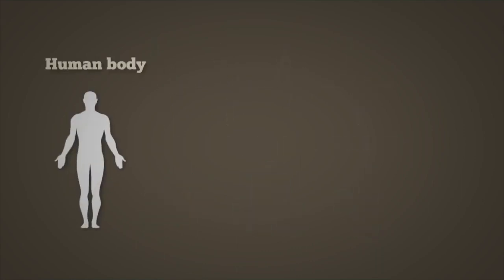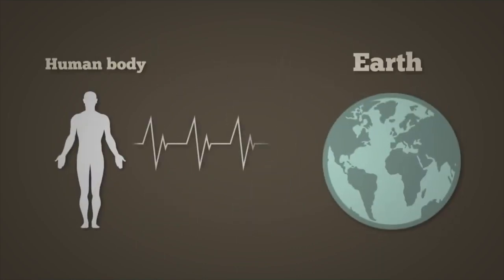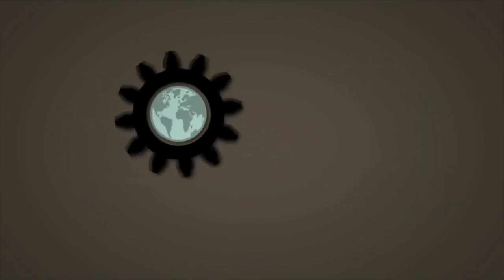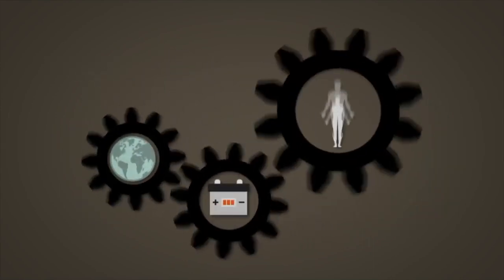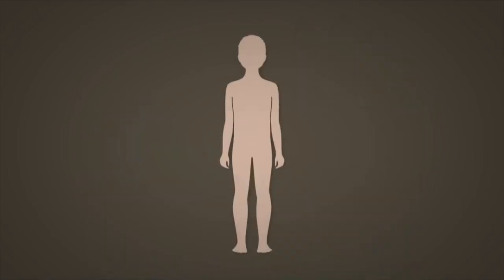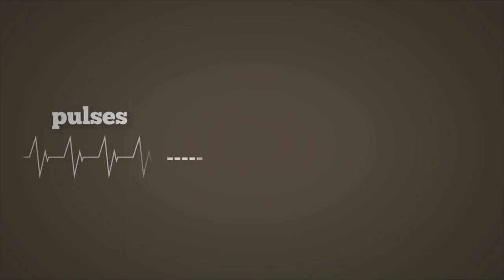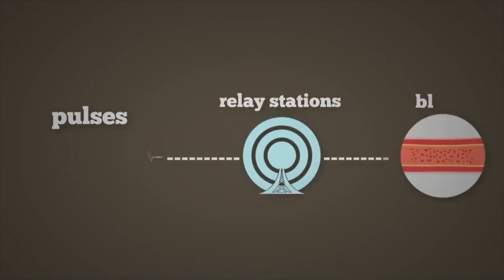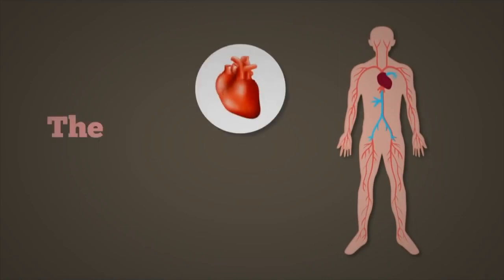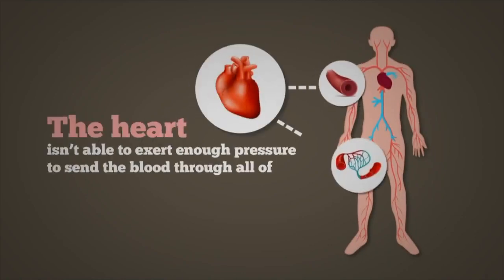Our body also pulses with the same basic frequency as the earth, and the pulse from the earth works like a battery recharger for our bodies. When we're young, our body pulses about three to five times per minute, and these pulses work like relay stations to help the blood flow through the body. This is necessary because the heart isn't able to exert enough pressure to send the blood through all of our blood vessels.